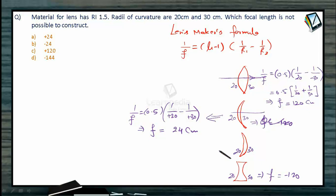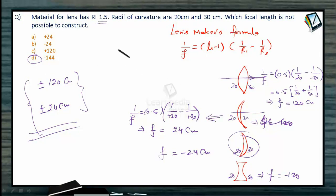And in the same way if you apply the formula for this situation you are going to get f = -24 centimeter. So possible focal lengths using this data are ±120 centimeter and ±24 centimeter. These four focal lengths are possible. So option D is going to be the correct option, because we have to select which focal length is not possible to construct out of this material having refractive index 1.5 with radius of curvature 20 and 30 only. So option D will be the correct.